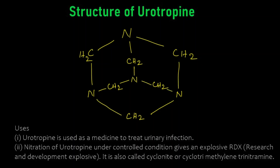This structure is known as urotropin and it has several uses. Urotropin is used in medicine for the treatment of urinary infections. The nitration of urotropin under controlled conditions gives an explosive called RDX, also called cyclonite or cyclotrimethylene trinitramine, which is a powerful explosive.